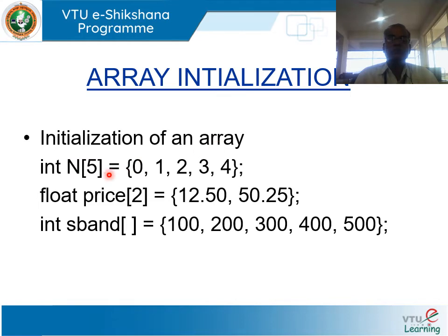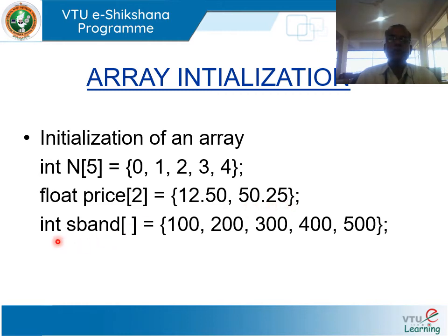Arrays can be initialized in different ways. For example, int n[5] = {0, 1, 2, 3, 4} initializes an array of 5 integers separated by commas in curly brackets. Another example: float price[2] = {12.50, 50.25}, which contains 2 float elements. Another way of initializing: if the number of elements is known, they can be assigned to a variable without specifying the size explicitly — the index is determined by counting the number of elements present in the initialization.